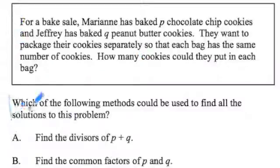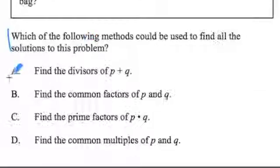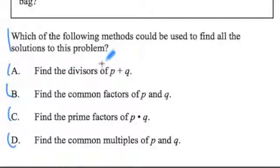Then it says which of the following methods could be used to find all the solutions to this problem. Then we have options A, B, C, and D. Find the divisors of P and Q. Find the common factors of P and Q. Find the prime factors of P times Q. Or D, find the common multiples of P and Q.